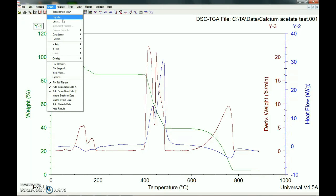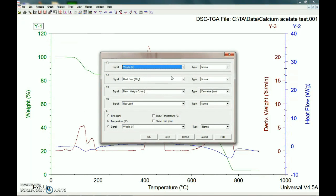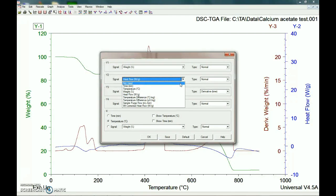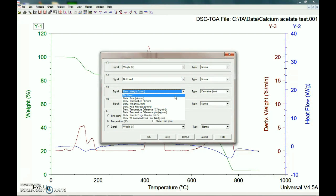So the one we're really interested in is the weight percent versus temperature. So go up to graph and signals. And we can just go ahead and get rid of these other ones here. The data is still there, but we're just making it so that the graph will only display the things we want here, which is weight percent on the y and temperature on the x. So hit OK.